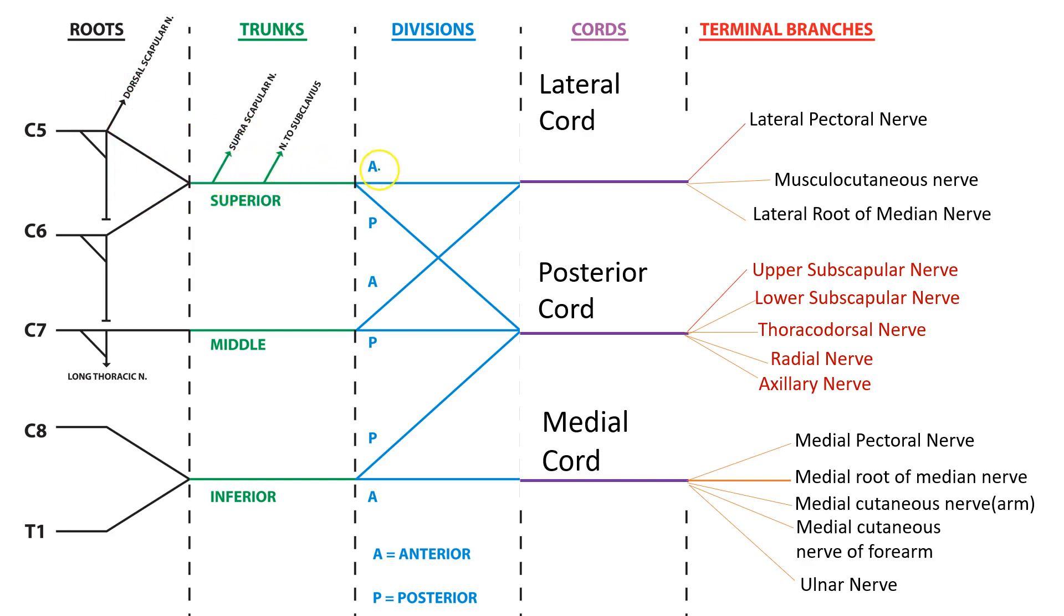Each trunk divides into anterior and posterior divisions. The anterior division of upper trunk and middle trunk join to form the lateral cord. The posterior divisions of the various trunks form the posterior cord and the anterior division of the inferior trunk continues to form the medial cord, giving various terminal branches.